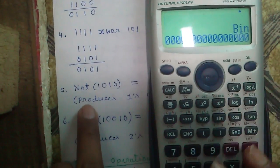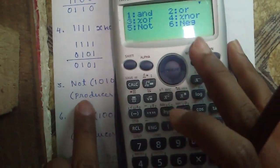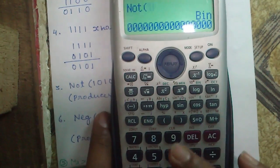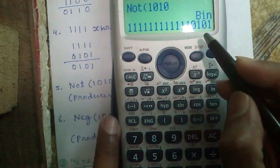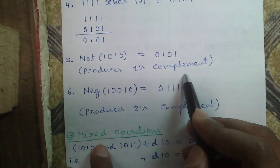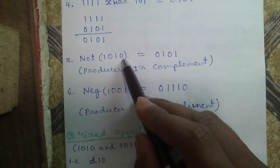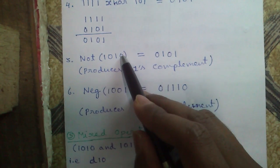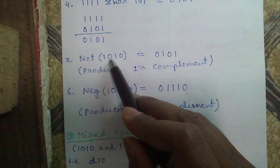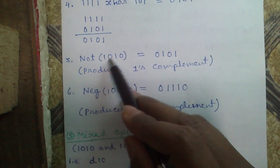Next is NOT. Shift and 3, number 5. NOT of 1010. That is 0101. The NOT means it produces one's complement. What is one's complement? One's complement is just reverse of each bit. If it's 0, it will become 1. If it's 1, it will become 0.